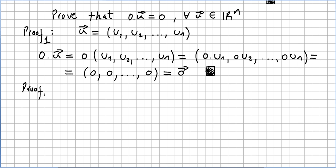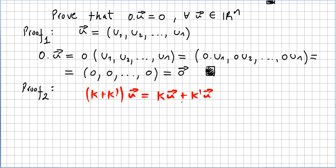Let us think of a second proof for this. In one of the previous videos, we proved that (k + k') times u equals ku plus k'u, where k and k' are scalars in the real numbers and u is a vector in the vector space.